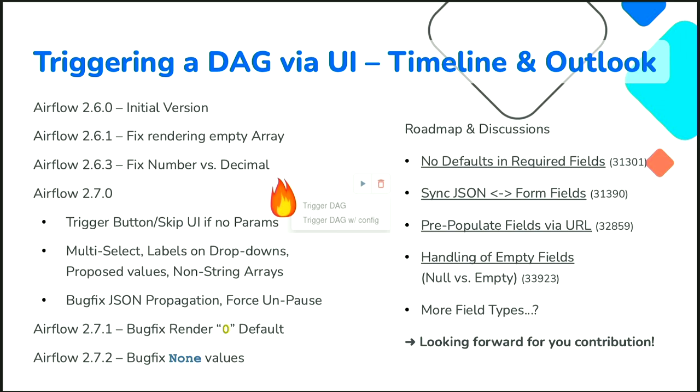It doesn't stop there — UI things tend to be feature-rich and you never run out of features. The approach is an 80-20 Pareto coverage, hopefully covering 80% of cases. There's ongoing discussion about required fields: currently parameters need JSON schema-compatible defaults, which is a problem if you want to force a user to enter a value. A PR is under discussion about whether manually triggered DAGs could have invalid defaults that the user must fill before triggering.